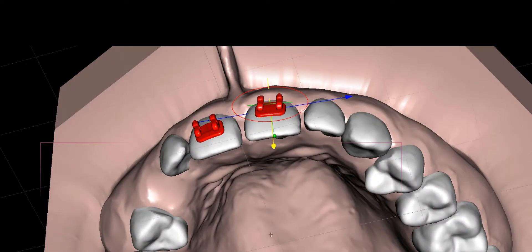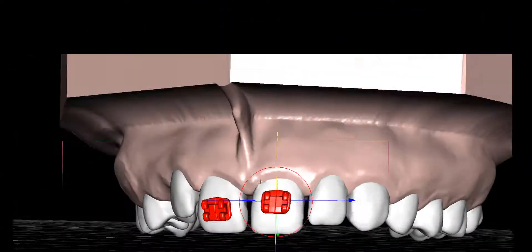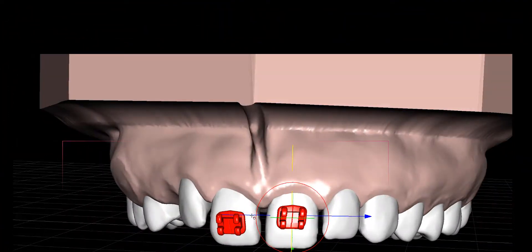It responds to the same parameters of being centered and the angulation. There is no change in the two bracket placements except for height, and obviously an MBT bracket will have different torque values than a Roth bracket.